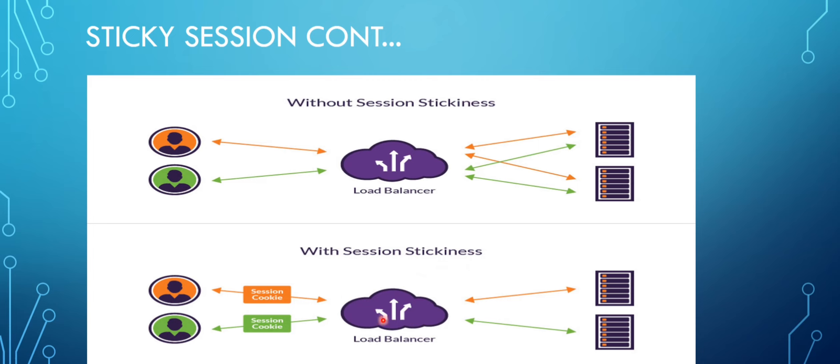Similarly, if user two wants data stored on one specific EC2 instance, we can enable session stickiness for them as well. If you come across a situation where traffic is not getting distributed across the EC2 instances behind the load balancer, the first thing you can check is whether session stickiness is enabled. If there is no requirement for it, you can disable it.